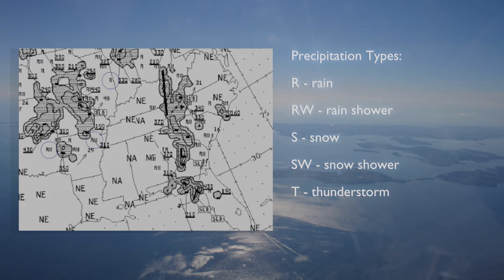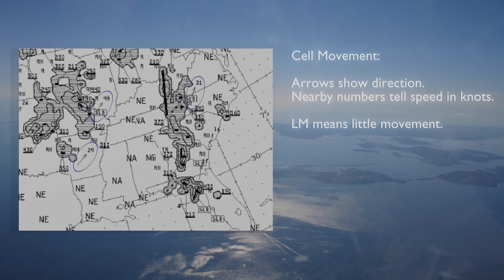Freezing precipitation is not plotted on the Radar Summary Chart. The average motion of radar returns is shown by arrows on the chart. A number next to the arrow represents speed in knots. LM means little movement.